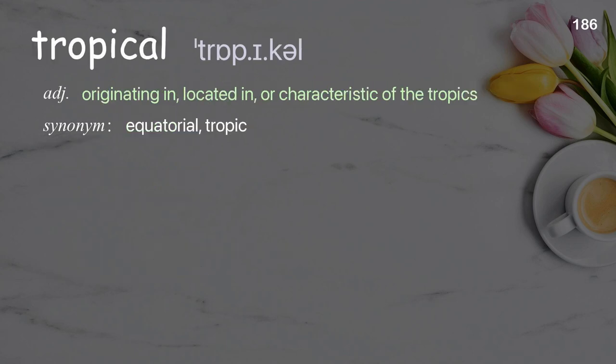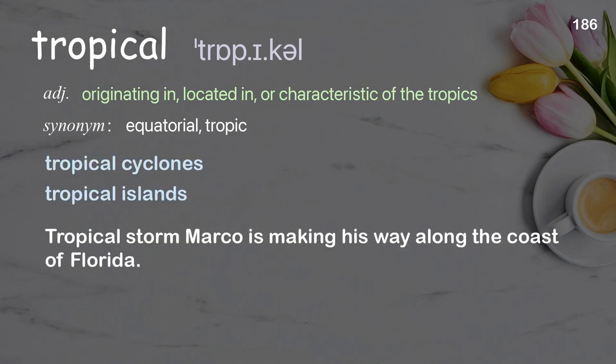Tropical: originating in, located in, or characteristic of the tropics. Examples: tropical cyclones, tropical islands. Tropical storm Marco is making his way along the coast of Florida.